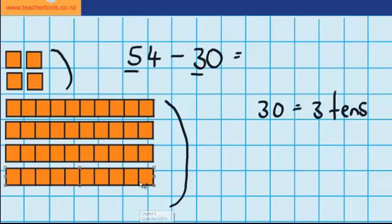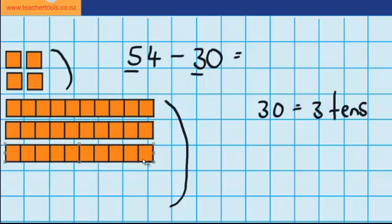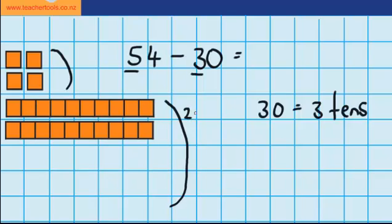So I'm removing 1, I'm removing 2 and I'm removing 3. So you can see that I've got 2 tens left or 20. And I've still got these 4 ones up here. So 20 plus 4 is 24.